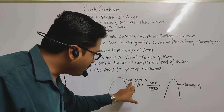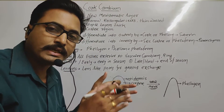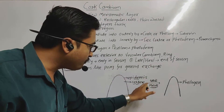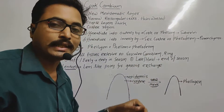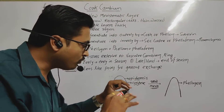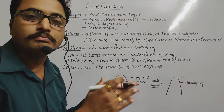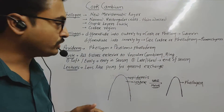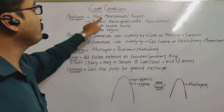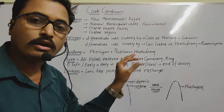Phelogen formation is required because at old age the epidermis and cortex cells get damaged by mechanical factors. The plant needs to replace these damaged layers. Phelogen is a new meristematic layer for the woody stem of a plant.